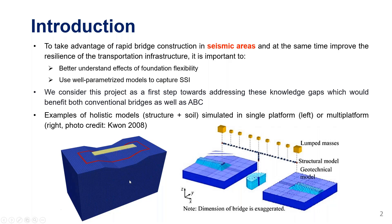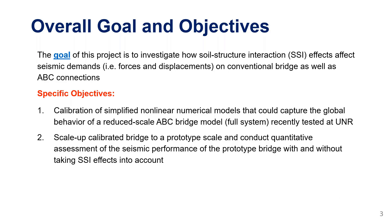Looking at the literature, historically if you account for structure and soil, one way is to have the entire system modeled in one platform. Alternatively, you can have multi-platform models — for example a bridge model in OpenSees and a geotechnical model in separate software communicating offline. What was implemented in this project is similar to the multi-platform approach but in an online way, not offline. The overall goal is to investigate how soil-structure interaction affects seismic demands — specifically the forces and displacements that affect the design of an ABC connection.